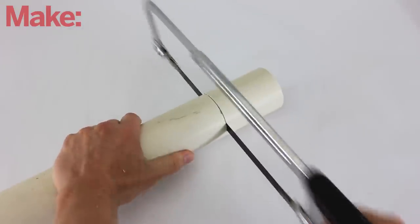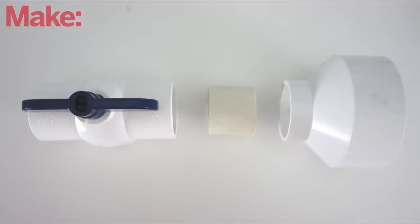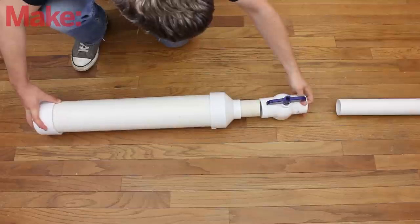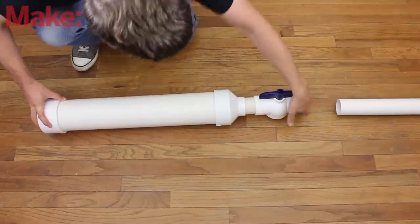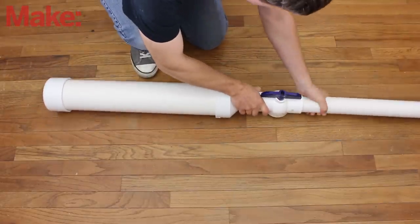The first thing that you need to do is cut off a small piece of the smaller pipe. This will let you connect the reducer fitting to the valve. Next, you want to test fit all the parts together. If you're happy with how everything fits together, then you're ready to glue them.